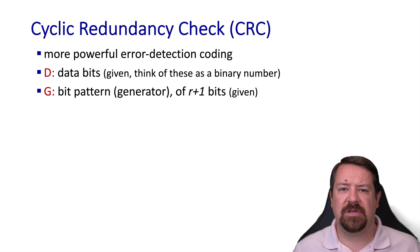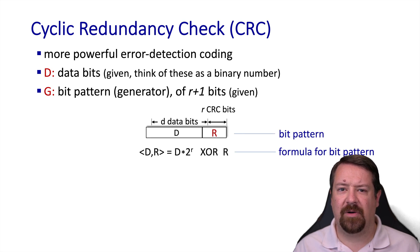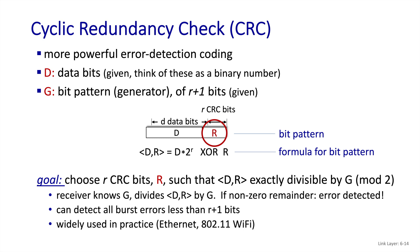At the link layer, we use CRCs, cyclic redundancy checks, which are much more powerful than the internet checksum. So we have our data bits, but we also need a generator, which is a pattern of bits that is a known parameter of the system. So with D data bits and our bit pattern R, we can compute these as D times 2 to the R XORed with capital R. And we're going to choose our CRC bits such that the tuple DR is exactly divisible by G using binary division. Like we said, G is a known parameter, meaning the sender and the receiver and all other devices using this CRC scheme know G ahead of time. The receiver then can perform the division, and if they get anything other than zero as the remainder, they know that an error has occurred along the way. This can detect R bits in error in the transmission. And this is the error detection scheme that is used in wired ethernet and Wi-Fi.